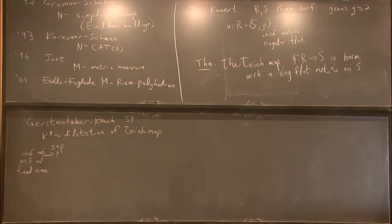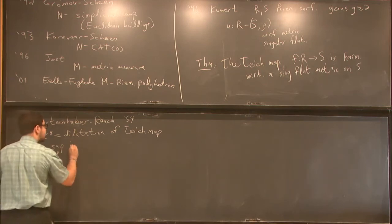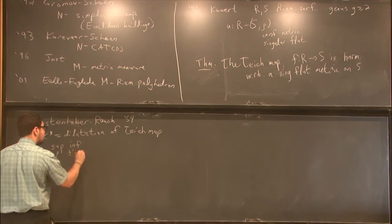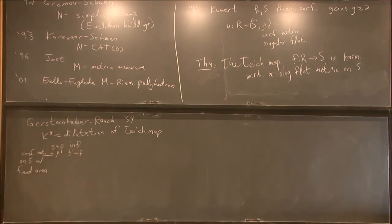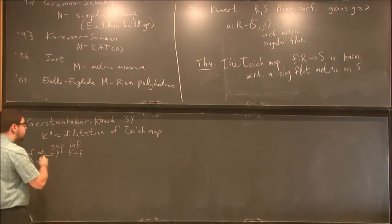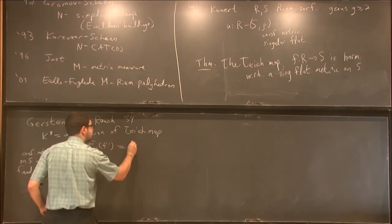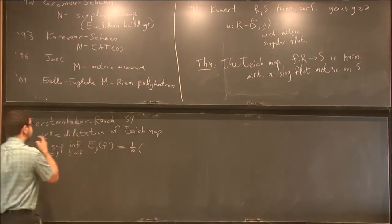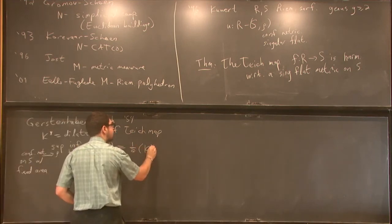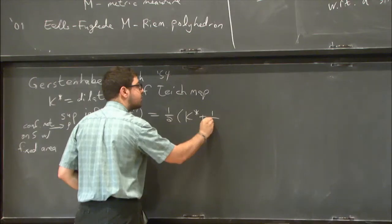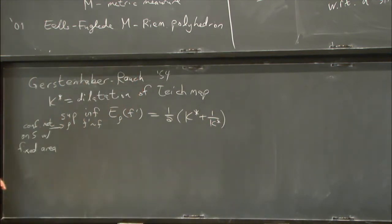So we consider these conformal metrics. And we consider all maps from R to S in a particular isotopy class, all diffeomorphisms. And we take the energy of F prime with respect to the metric rho. This computes this minimal dilatation, which is related to the Teichmuller distance on the Teichmuller space.